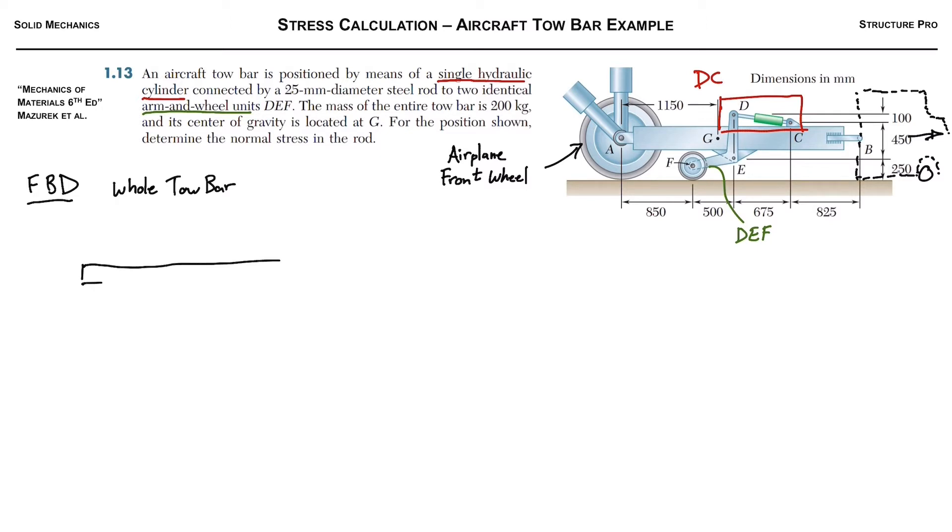So you just start trying and see where it leads. We'll start with the whole tow bar here and basically we'll draw the little arm here for the wheels and then the little element that we're trying to calculate the stress in. Okay, so then we start filling in the forces.